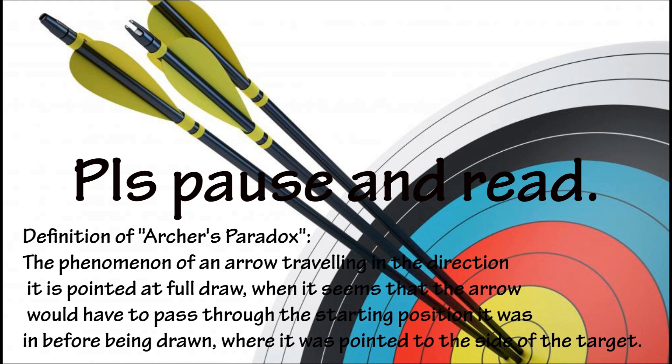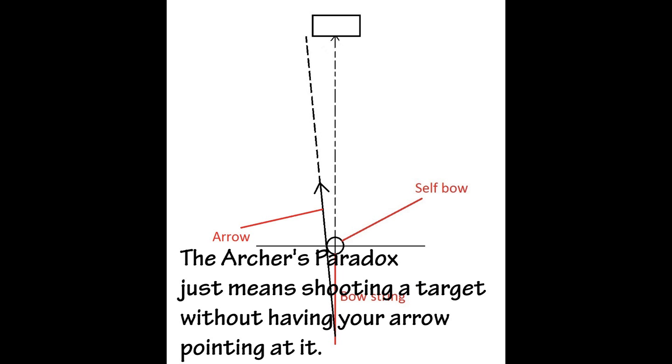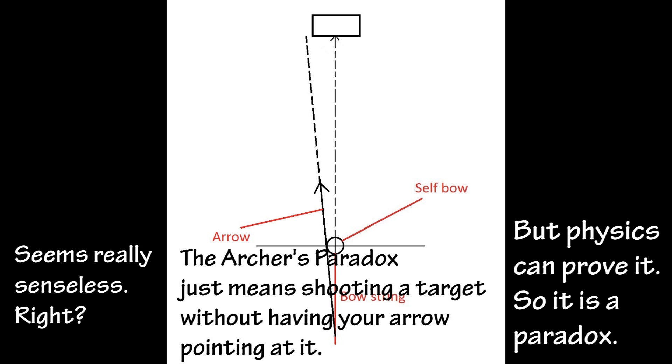Here's the definition of the Archer's Paradox. You are welcome to pause and read it yourself. Let's make it less complicated. The Archer's Paradox just means shooting at a target without having your arrow pointing at it.